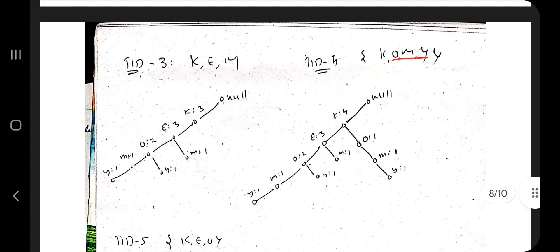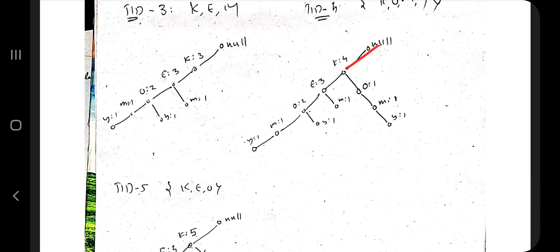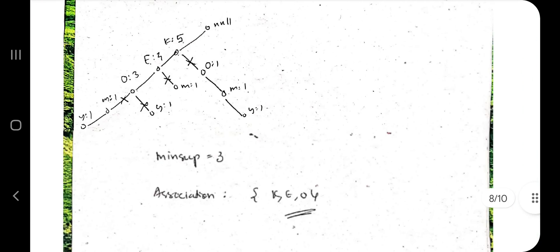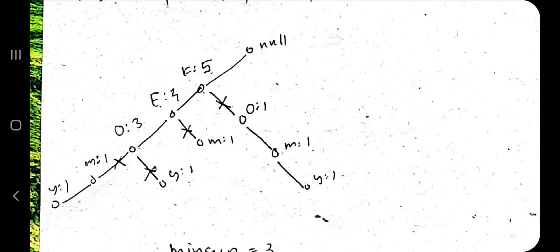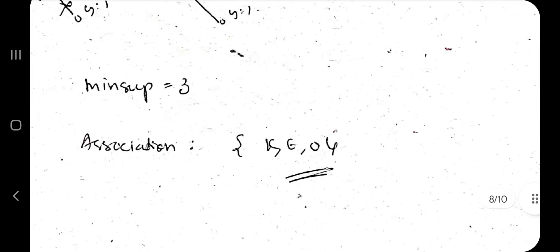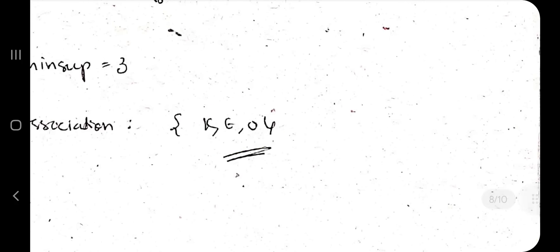Continue similarly for remaining transactions — for example, K, O, M, Y creates a new branch under K since O is not defined after K in an existing path. After processing all five transactions, prune the tree: any node with count less than the minimum support (3) gets its branch cut. Working through the tree, nodes below threshold are removed.